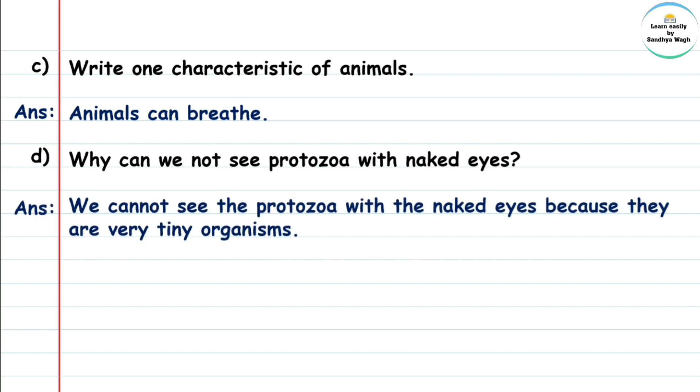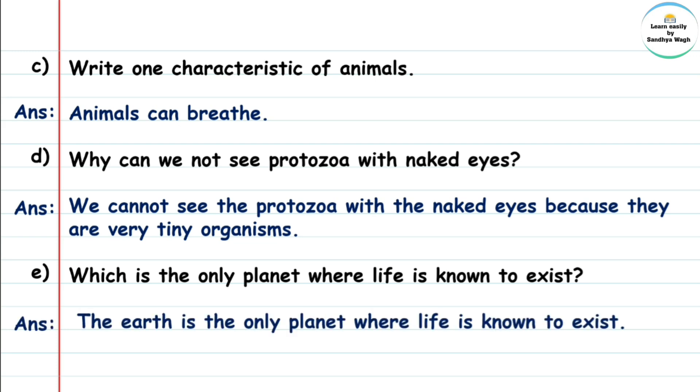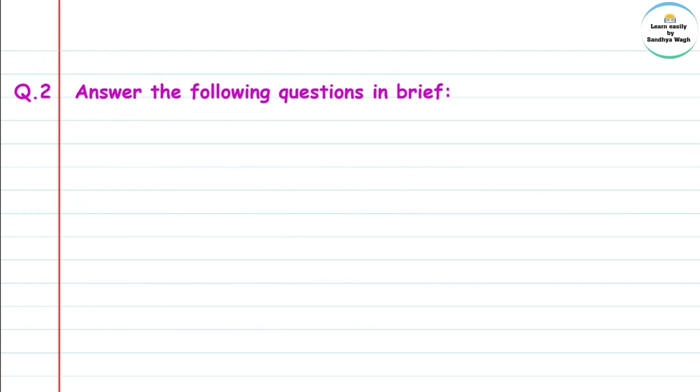Answer: We cannot see the protozoa with the naked eyes because they are very tiny organisms. Part e: Which is the only planet where life is known to exist? Answer: The Earth is the only planet where life is known to exist.